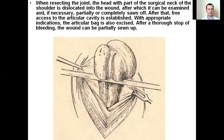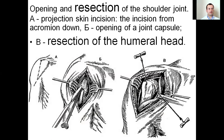Opening and resection of the shoulder joint: A. Projection skin incision — the incision from the acromion down; B. Opening of the joint capsule; V. Resection of the humeral head.